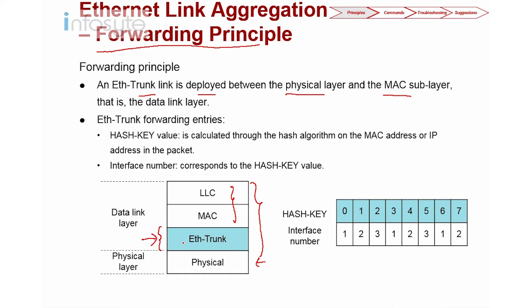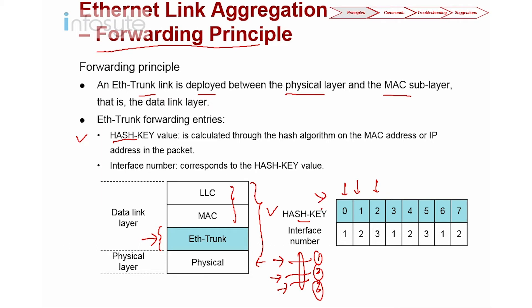Now, how does EtherTrunk do the forwarding? Assuming I have three physical interfaces — number one, two, and three — I have to create what we call a hash table. The EtherTrunk will use a hash key to direct data, so hash number zero goes to interface one, hash number one goes to interface two, and so on. The hash value comes from the internal algorithm of the switch, based on MAC address or IP address, and the hashing is also based on the number of interfaces you have.